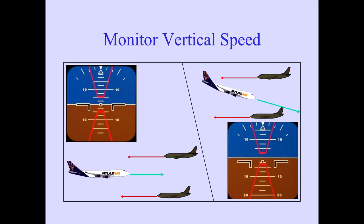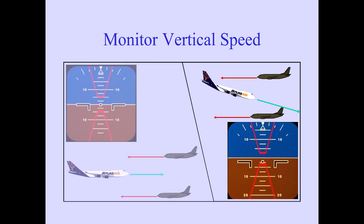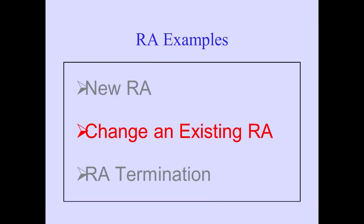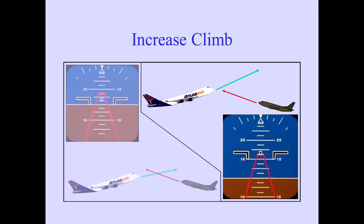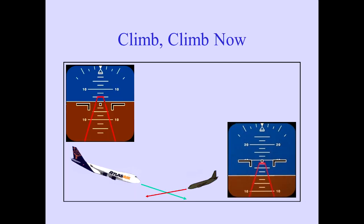If the 'Monitor vertical speed' command sounds, avoid deviation into the red area. The increase climb RA increases the pitch of an existing climb RA, with the enunciation 'Increase climb, increase climb,' and TCAS changes the pitch command on the PFD. If the 'Climb, climb now' command is given, TCAS reverses an existing RA descent to a climb. The transition to a climb must be promptly and smoothly accomplished.